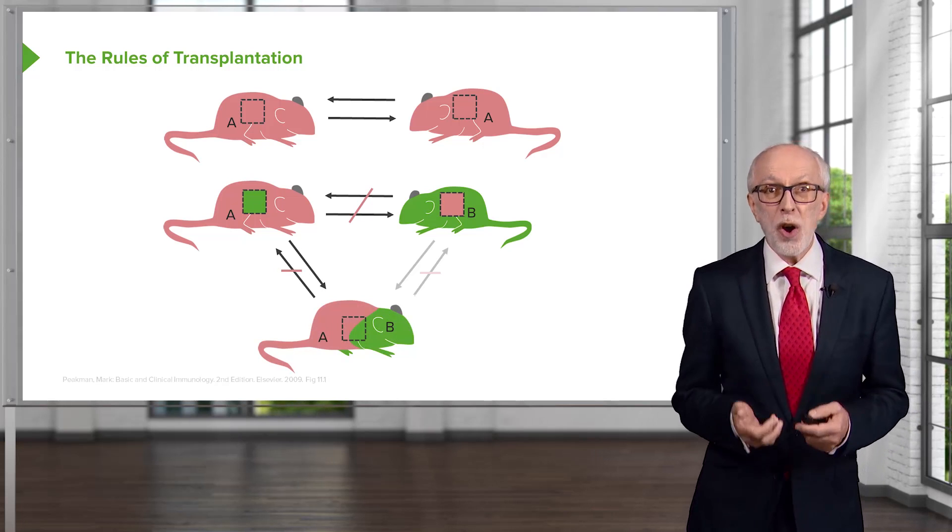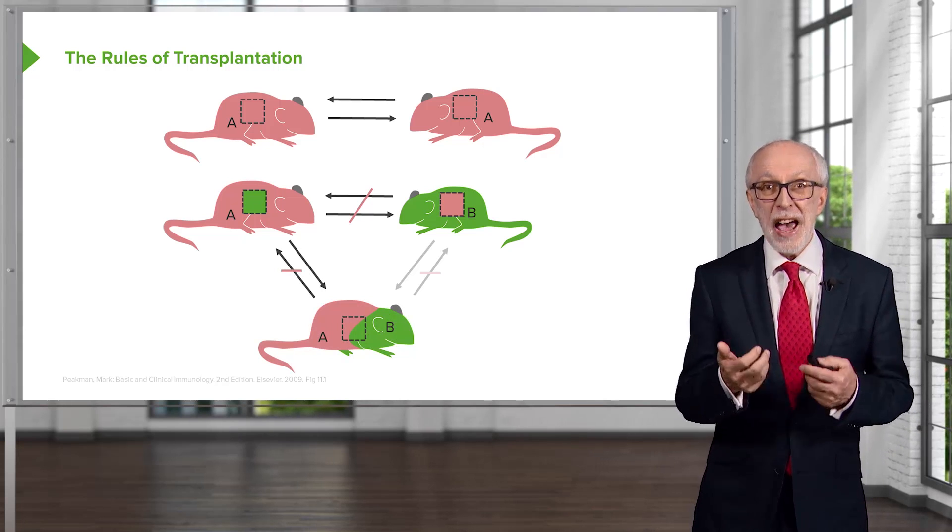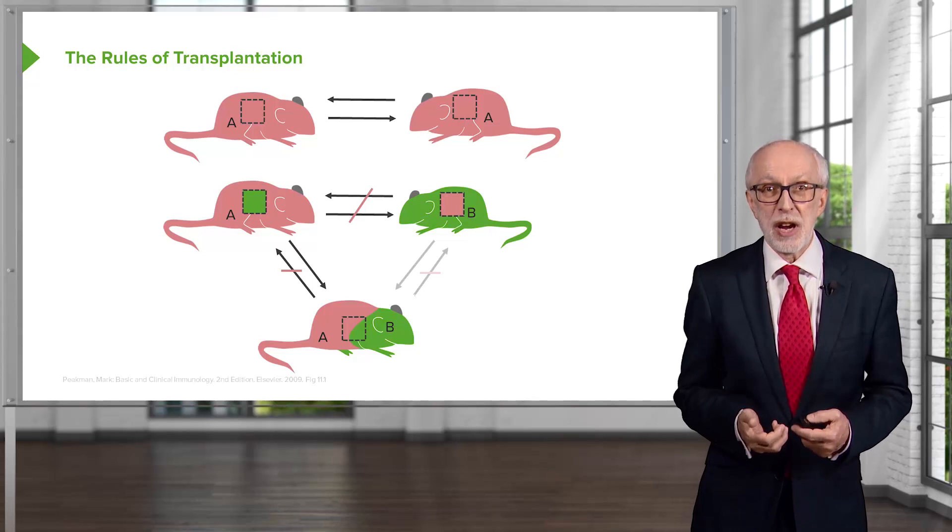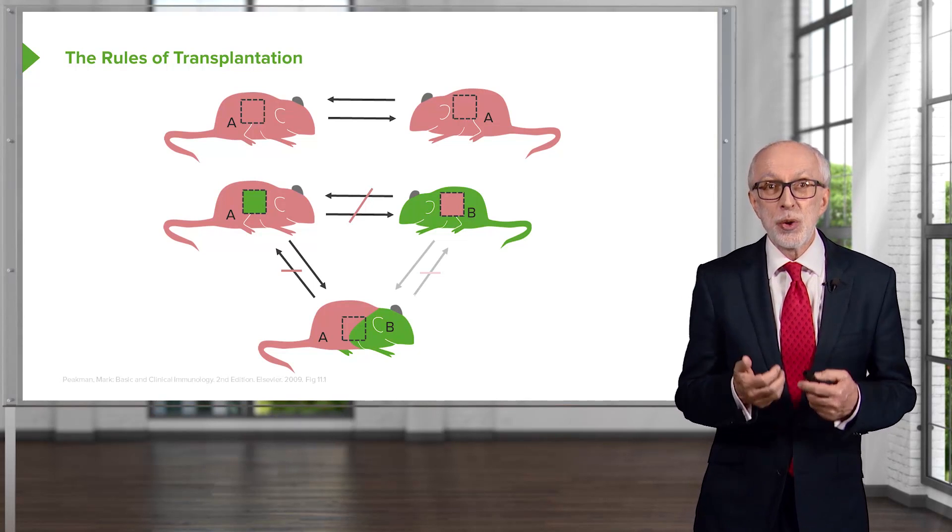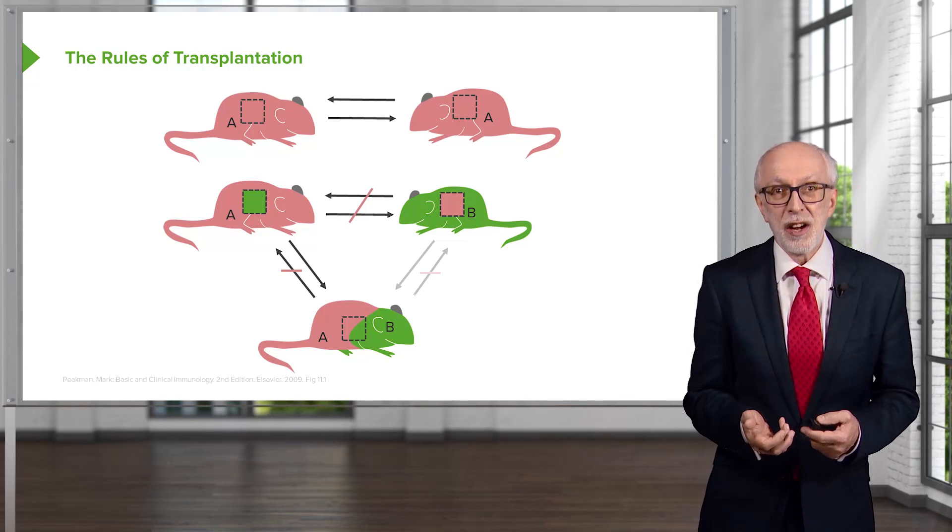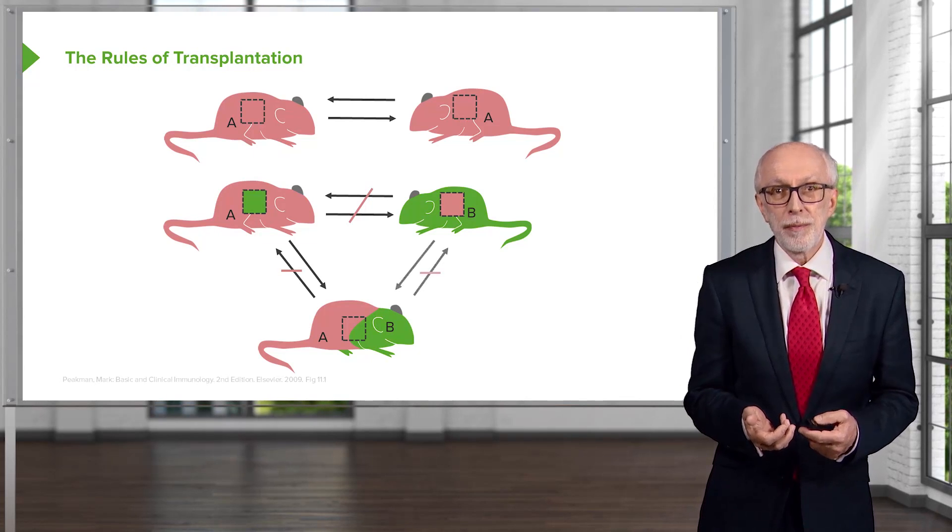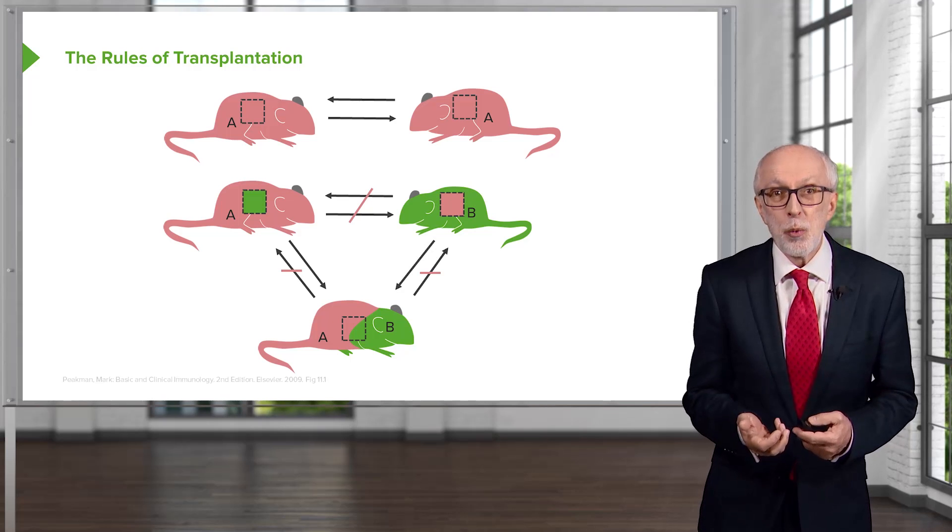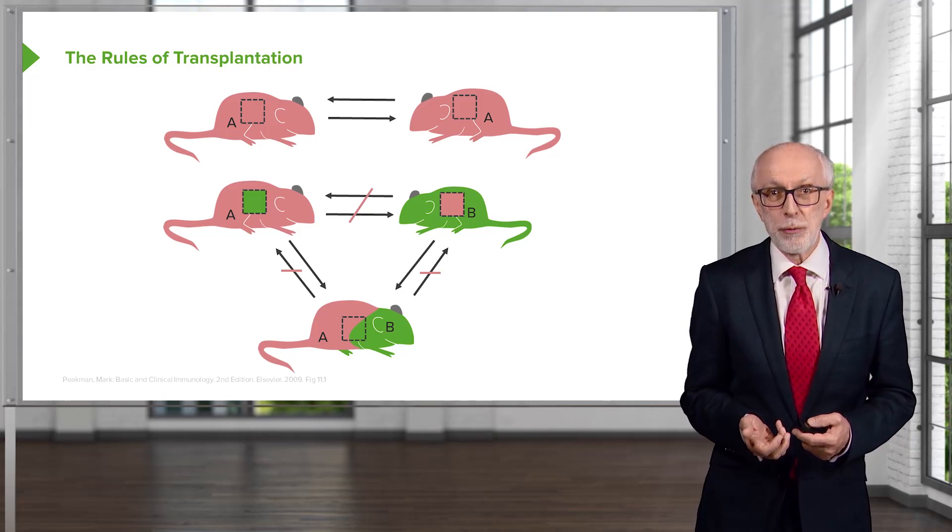Looking at the F1 hybrid of an A times B strain mouse, you can see that A skin would be accepted on the F1 hybrid, and B skin would also be accepted on the F1 hybrid.